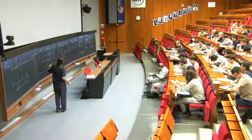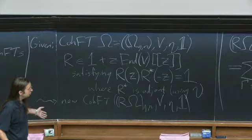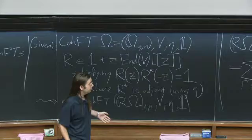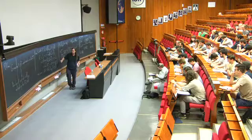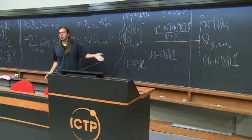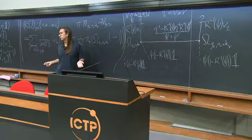The fact that this is a group action is quite a lot to check. You can check that this takes cohomological field theories to cohomological field theories — that requires checking the three axioms. You can also check that this is a group action of this group of matrices, sometimes called the symplectic loop group. I should note that in this formula, R itself doesn't appear, only R^{−1} appears — that's just so it will be a left action instead of a right action.